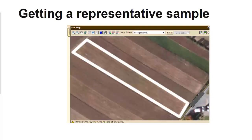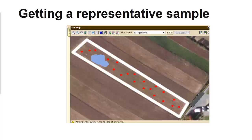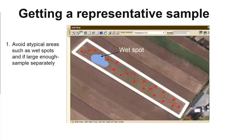Another method is to walk through the field in a zigzag pattern and take random subsamples. When sampling, avoid atypical areas such as wet spots. If those areas are large enough, you can sample them separately.